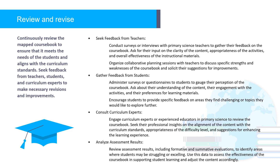Gather feedback from students by administering surveys or questionnaires to gauge their perception of the coursebook — asking about their understanding of the content, engagement with the activities, and preferences for learning materials. Encourage students to provide specific feedback on areas they find challenging or topics they would like to explore further. Consult curriculum experts or experienced educators in primary science to review the coursebook, seeking their professional insights on alignment with curriculum standards, appropriateness of the difficulty level, and suggestions for enhancing the learning experience. Analyze assessment results, including formative and summative evaluations, to identify areas where students may be struggling or excelling, and use this data to adjust the content accordingly.